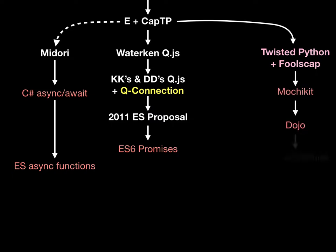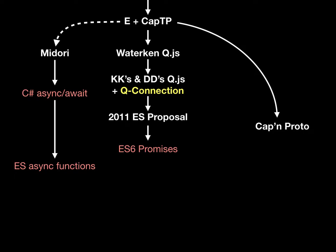There was another branch — Twisted Python and Foolscap — that was using deferreds and also distributed capability-based objects, but that one misunderstood the E-promise design. Their deferreds didn't support pipelining, and that led to some derived work that ended up being a dead end. Orleans at Microsoft was another one specifically built to enable large-scale services and worked quite well at scale. This computational model is known to work well and has had many instantiations.